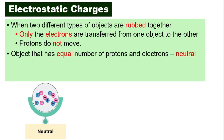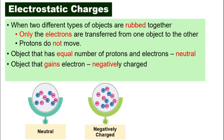An object is neutral when it has the same number of protons and electrons — just like this diagram here with five protons and five electrons. But electrons can be transferred from one object to another. If an object receives extra electrons, say it now has seven electrons and five protons, it has gained electrons.